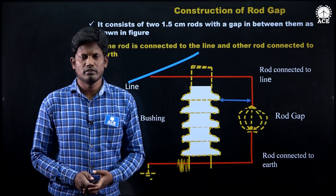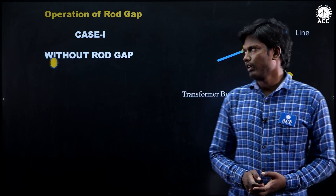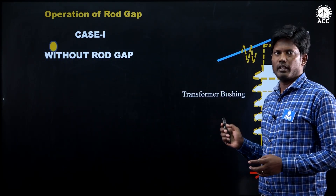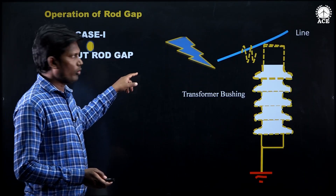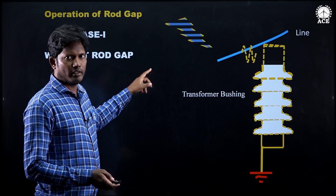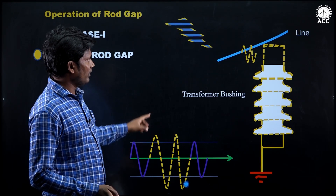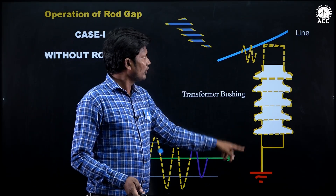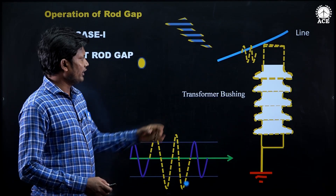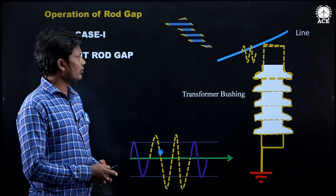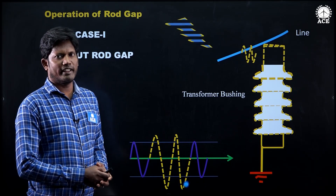This is the simple construction of the rod gap. Now the operating principle of the rod gap — what happens without the rod gap: whenever lightning strikes on an overhead transmission line, the voltage increases. This voltage diverts from the line to ground through the insulators, and due to such a high voltage, the insulators may get damaged. In order to protect these insulators and the transformers, we use the rod gap arrestors.